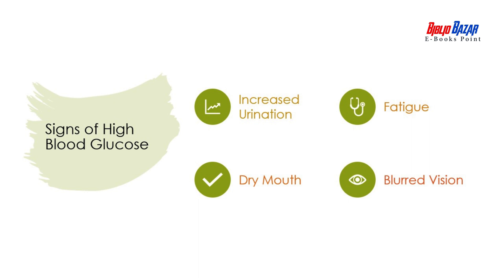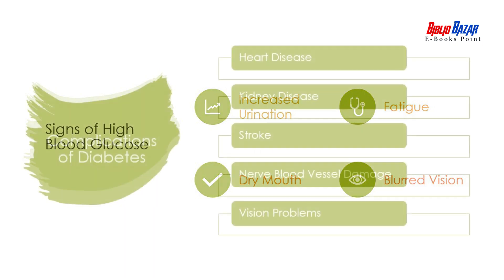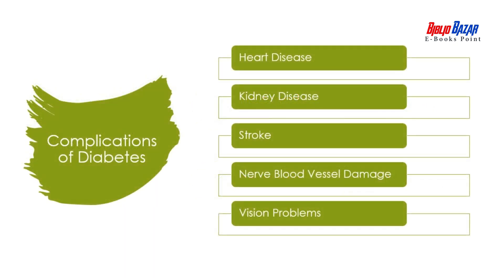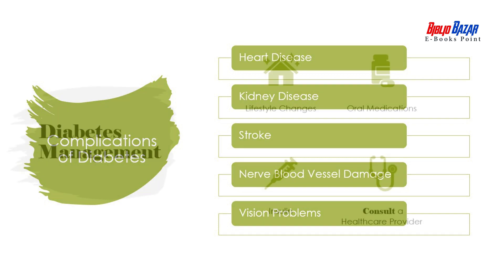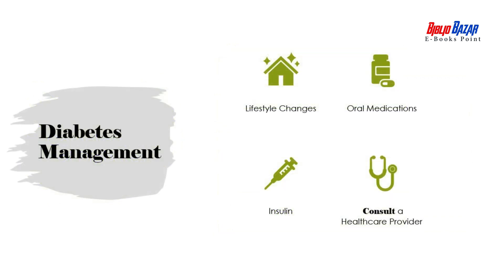Next, let's discuss the signs of high blood glucose levels, which include increased fatigue, urination, dry mouth, and blurred vision. High blood glucose levels can lead to many complications such as heart disease, kidney disease, and stroke.